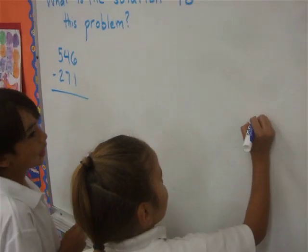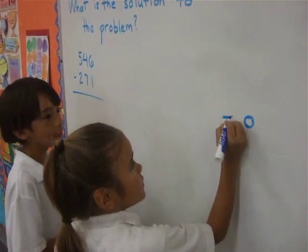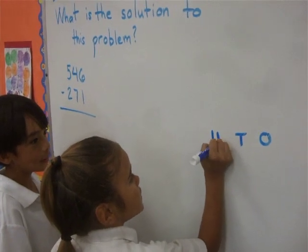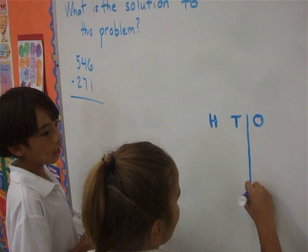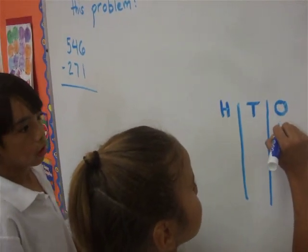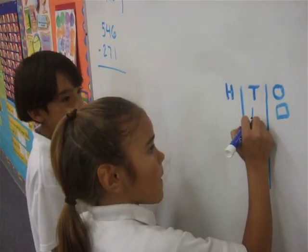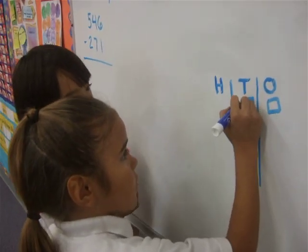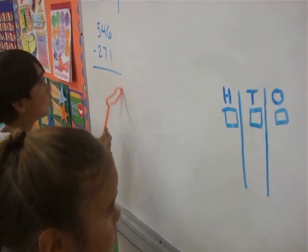First, you write ones, tens, hundreds. Then you draw the lines, then you draw the boxes, and the ones, tens, hundreds.